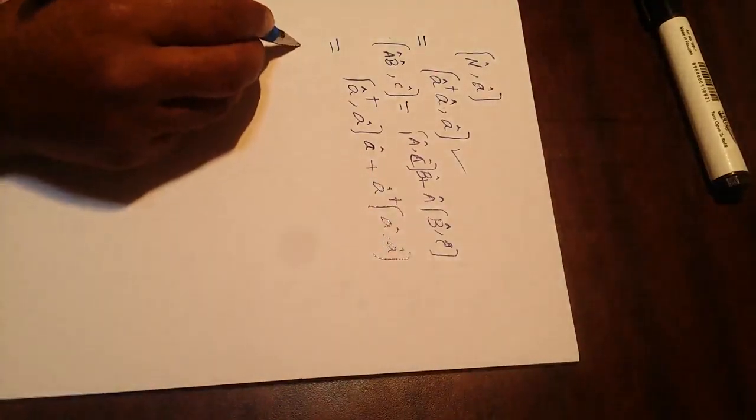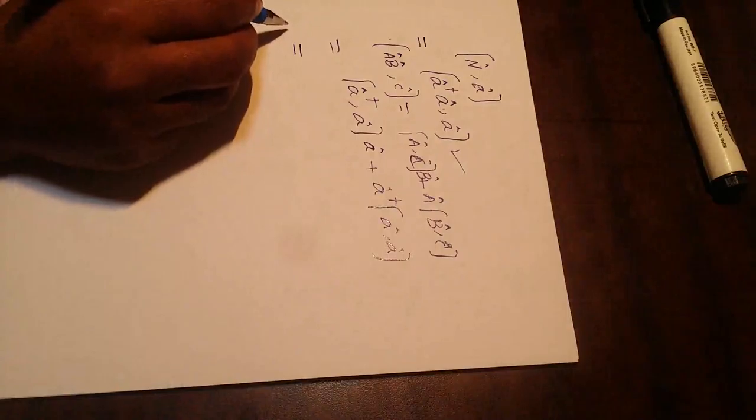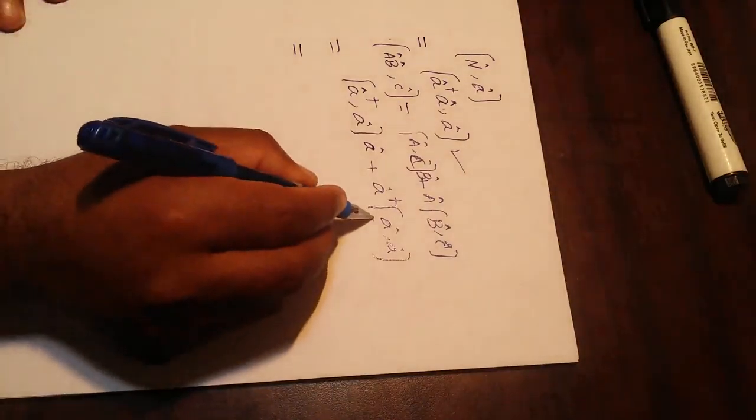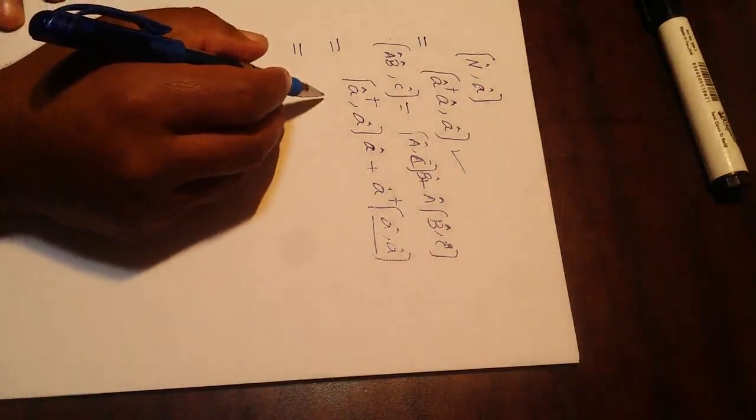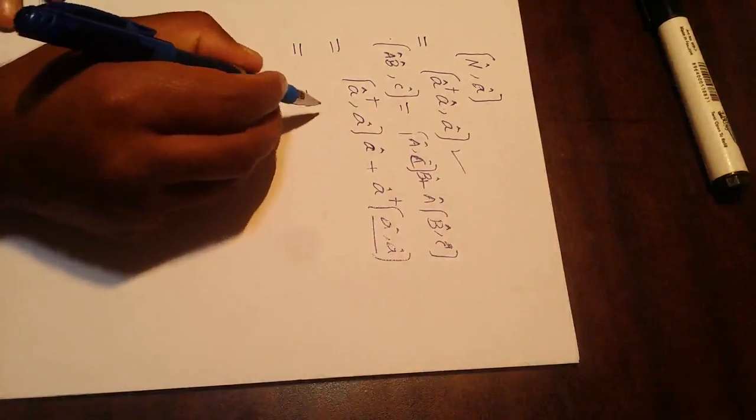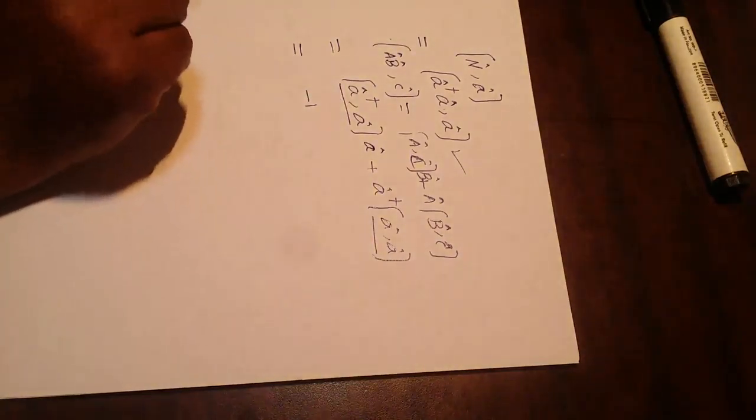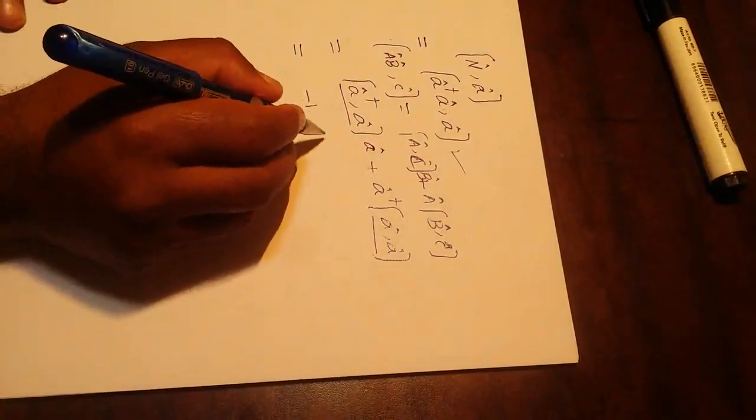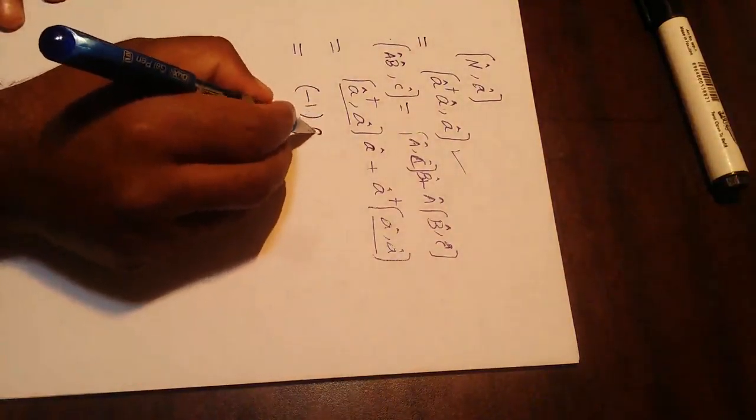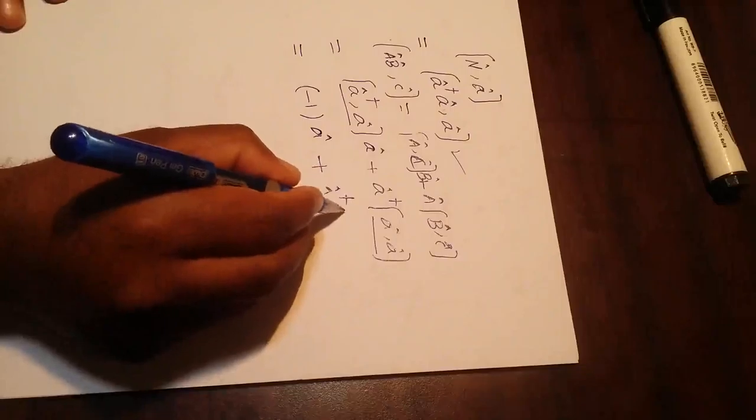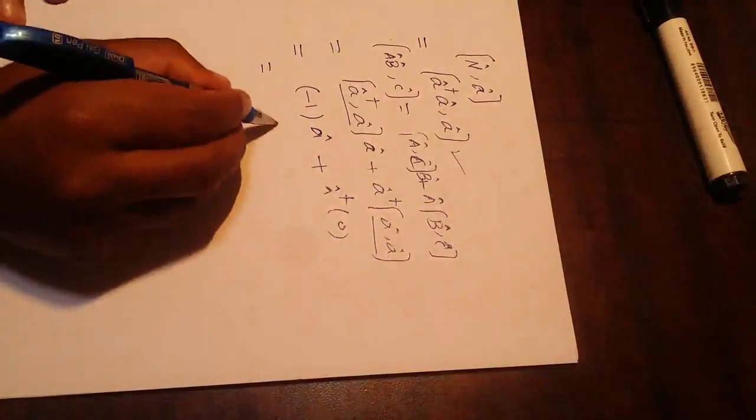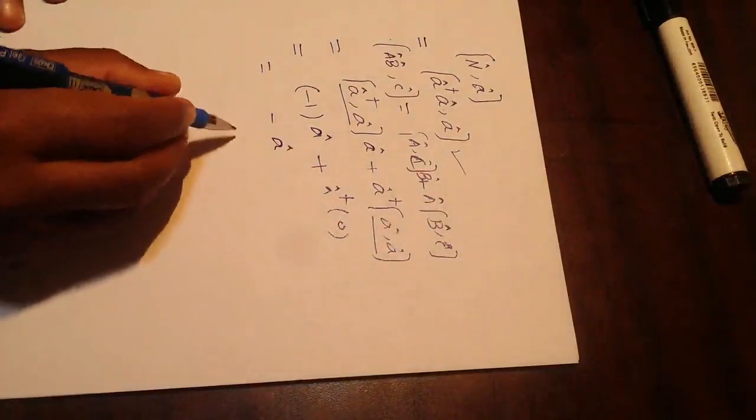Which is equal to - you know this is 0 because commutator with itself - and this is equal to minus 1, this we have proved it. Minus 1, plus a dagger times 0, minus a.